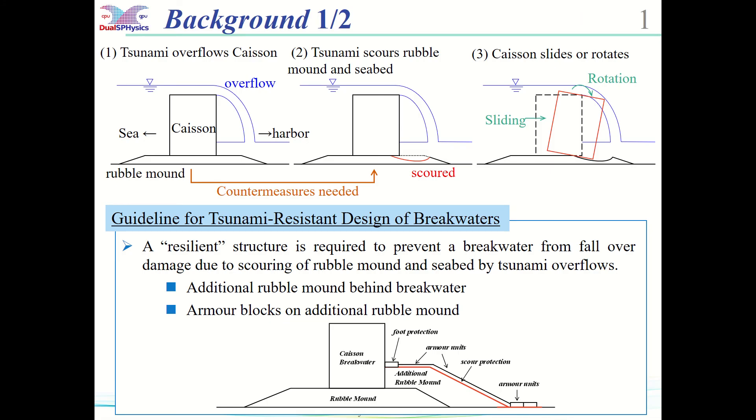Many coastal structures were damaged by the Great East Japan earthquake tsunami on March 11, 2011. The main cause of breakwater damage was tsunami overflowed breakwater and scoured seabed and rubble mound. To response to this, the guideline for the design of breakwater concerning resiliency against tsunami was issued. One of the countermeasures is constructing additional rubble mound behind breakwater covered by armor blocks.